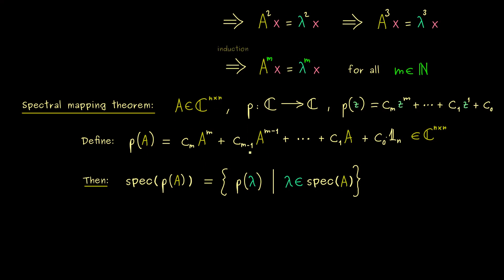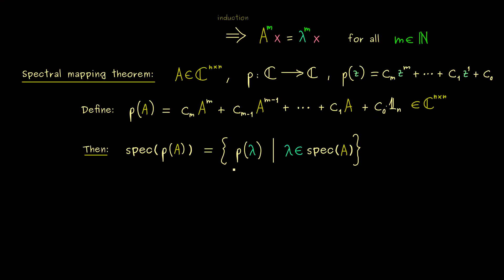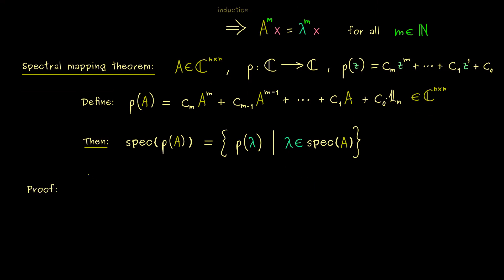This result can be generalized for more functions than just polynomials, though then you really have to explain what it means to put a matrix into the function. For polynomials that's not a big problem, which is why we formulate the spectral mapping theorem for polynomials. For the proof, we have to show a set equality, which means two inclusions. The first inclusion — that the spectrum of p(A) contains the image set — we have already essentially shown. So we focus on the other inclusion.